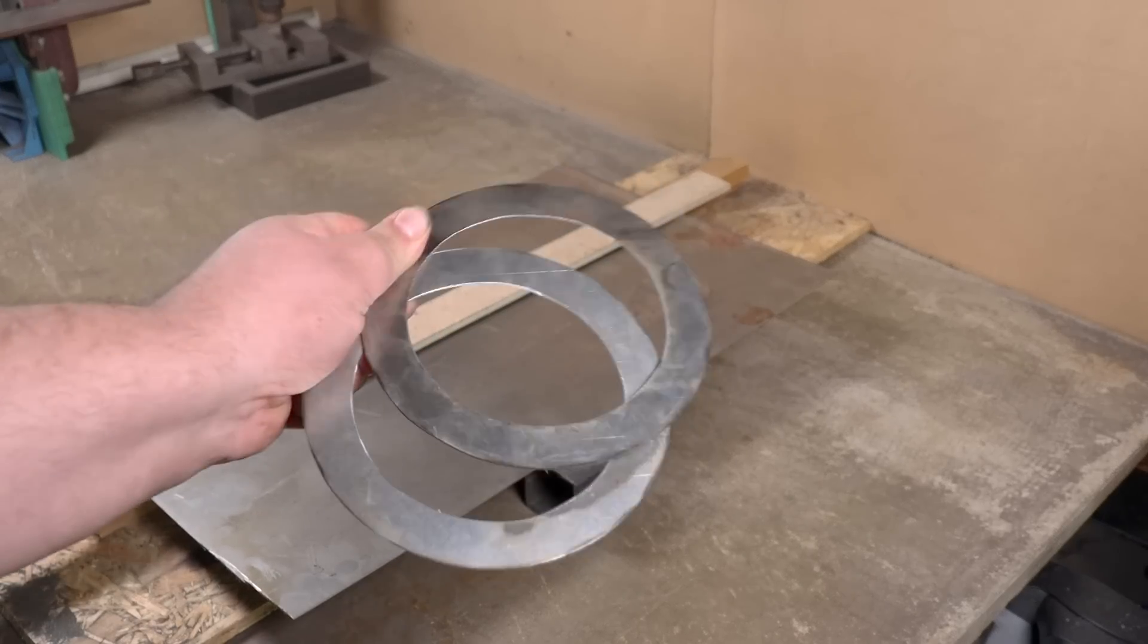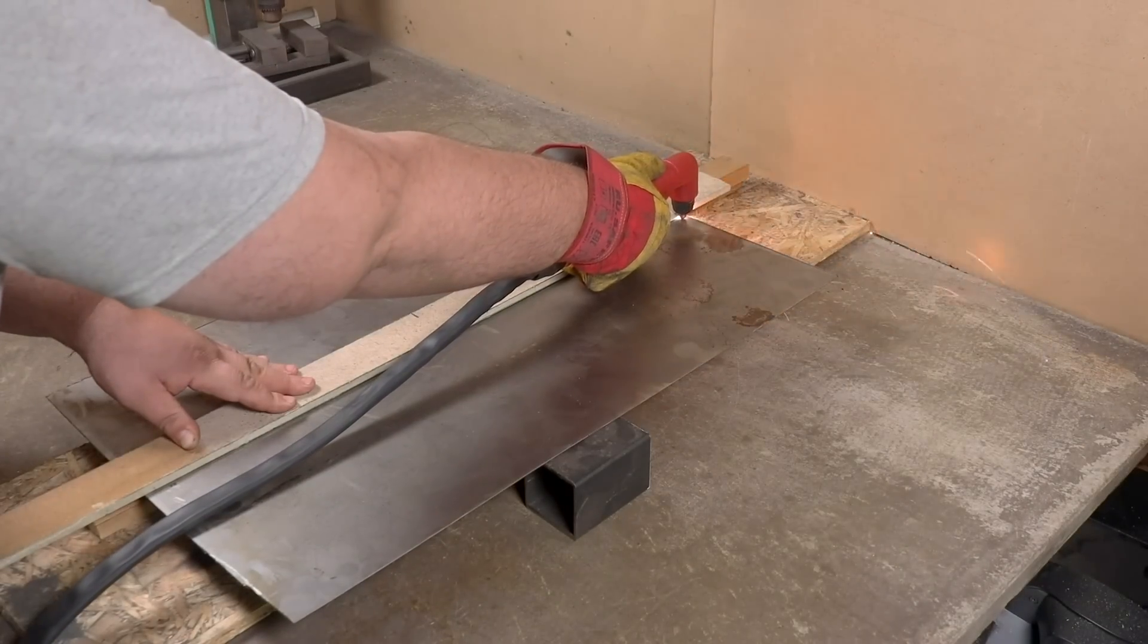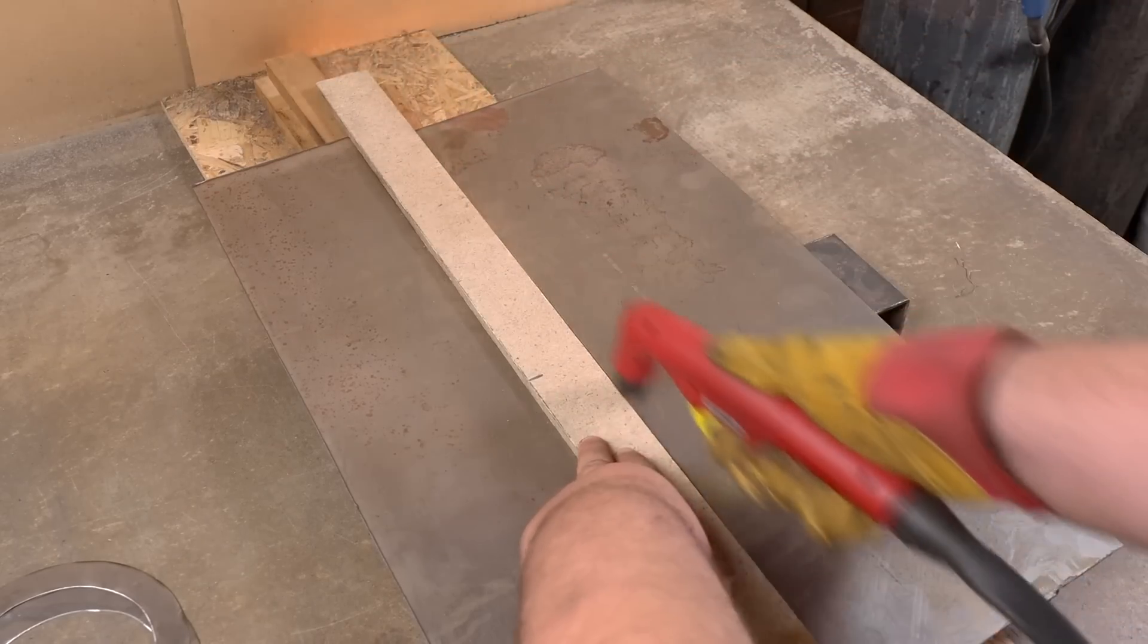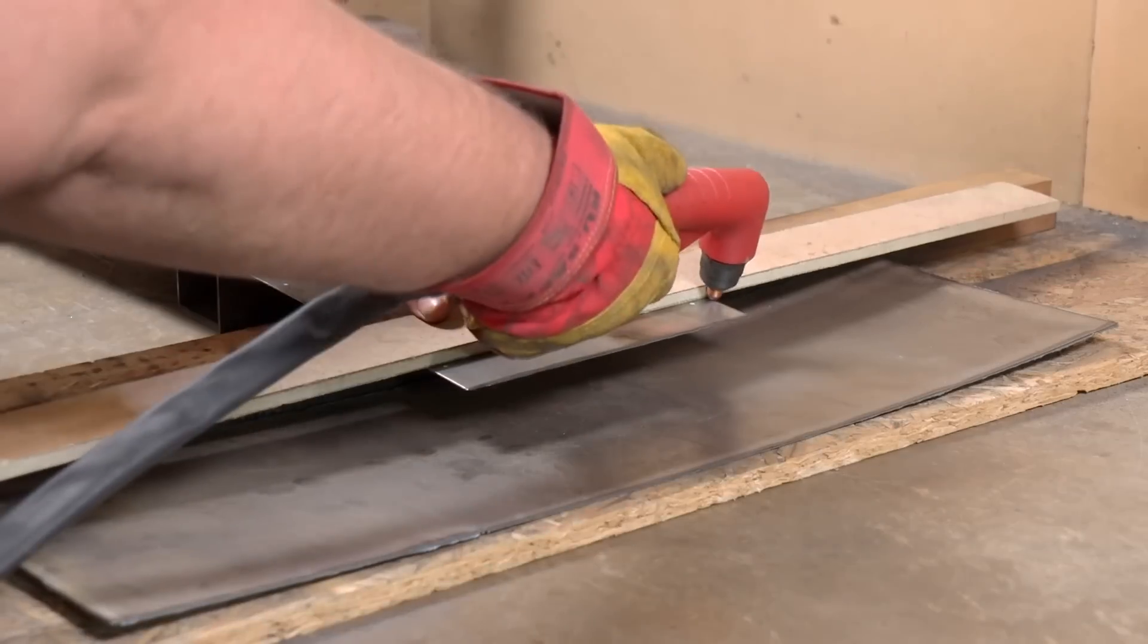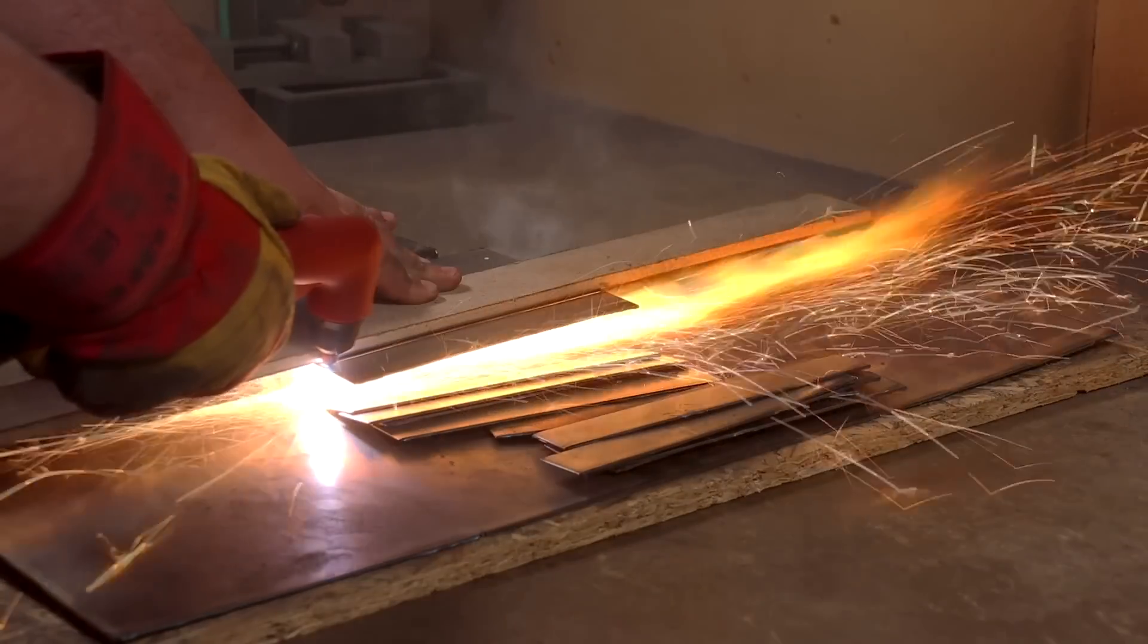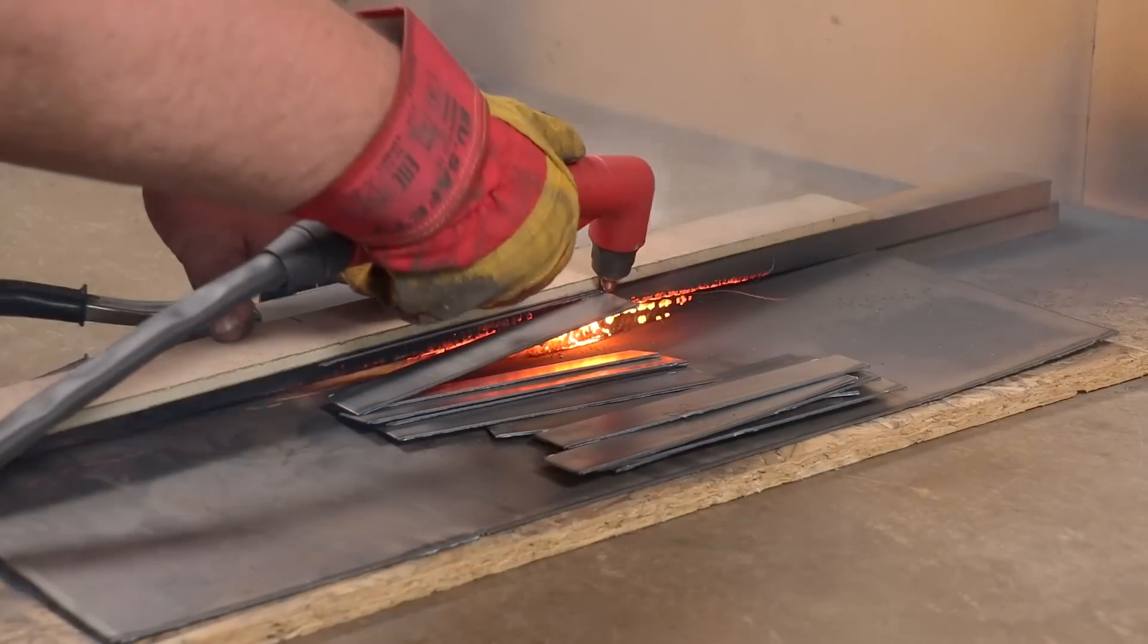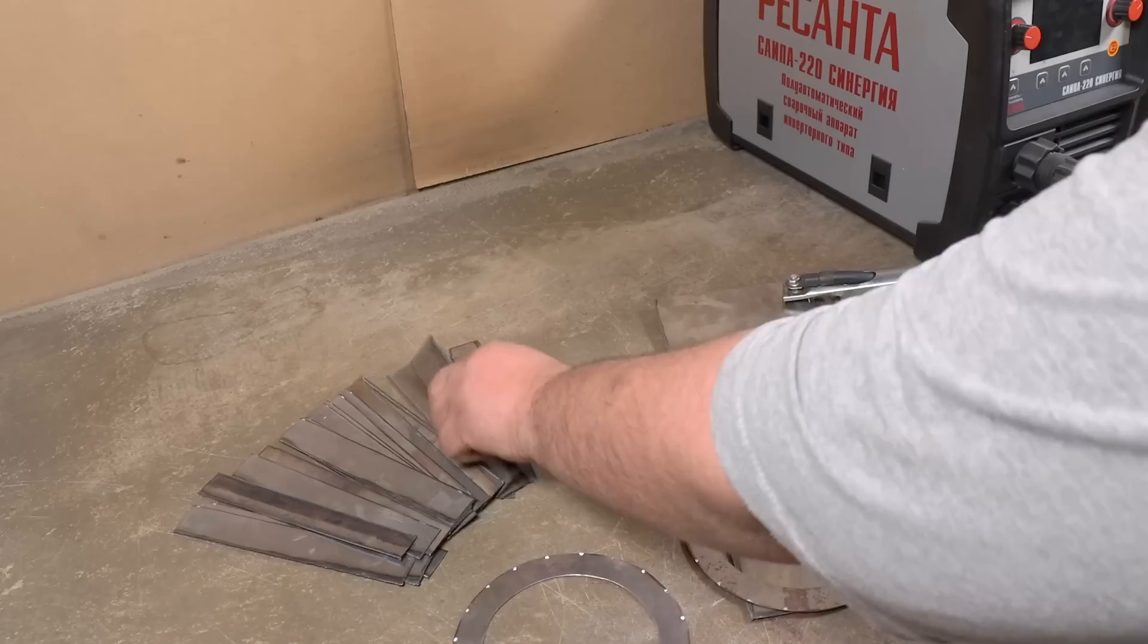I cut two rings with a diameter of 160 millimeters for the nozzle, which will increase the thrust and form a fire tornado, thereby increasing the efficiency of the candle and the stove. I cut 20 identical strips that will form a tornado. I even made a small fire on the workbench. I placed these ribbed plates at an angle around the circumference of the rings.